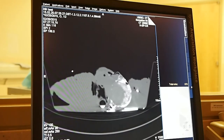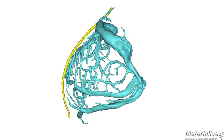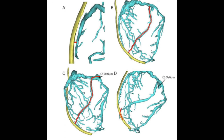From the resulting DICOM images, we created three-dimensional models of the coronary veins and left phrenic nerve anatomy. Using these reconstructions, we were able to take various clinically relevant measurements to characterize the locations where the phrenic nerve overlapped the coronary veins. We measured the distance between the nerve and the vein, the distance along the vein to the coronary sinus, the distance along the vein to the coronary sinus ostium, and the proximal angle between the nerve and the vein.